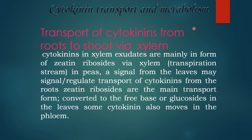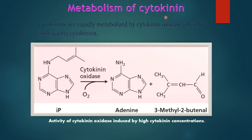Cytokinin transport and metabolism: transport of cytokinin from root to shoot occurs via xylem. Cytokinin in xylem exudate is mainly in the form of zeatin ribosides. A signal from the leaf may regulate transport of cytokinin from the root; zeatin riboside, the main transport form, is converted to the free base or glucoside in the leaves. Some cytokinins also move in the phloem. Cytokinins are rapidly metabolized by cytokinin oxidase, thereby inactivating the cytokinins into Rd9 plus 3-methyl-2-butanol. The active cytokinin oxidase is induced by high concentration of cytokinin.